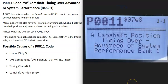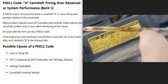What are some possible causes of a P0011 code? The first thing to do is check the engine oil — be sure it's not really low or really dirty. Low or dirty engine oil can affect what's called variable valve timing, which many vehicles have these days. If the engine oil is really low or dirty, that could throw off the variable valve timing and cause issues.